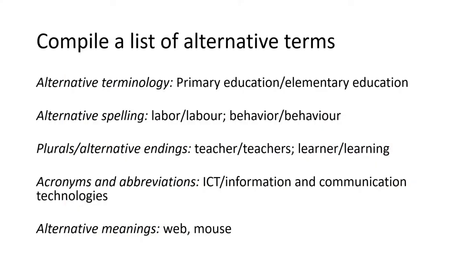From these key concepts, we now want to compile a list of alternative terms. These can be synonyms, alternative spellings, plurals and alternative endings, and acronyms and abbreviations. Also, be sure to keep in mind alternative meanings for words on your list.